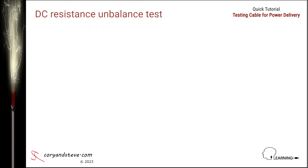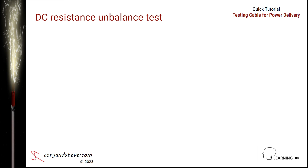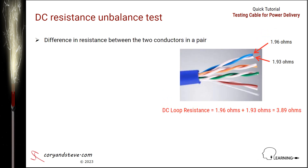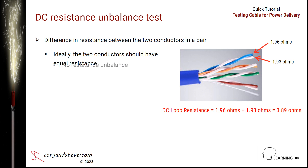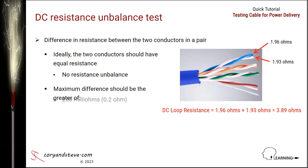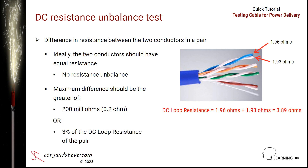Next we have DC resistance unbalance, the second of the three DC resistance tests. DC resistance unbalance for a pair is calculated as the difference in resistance between the two conductors in a pair — recall that DC loop resistance was the sum. Ideally, the two conductors should have equal resistance and there should be zero difference or no resistance unbalance in any of the four pairs. But in the worst case, the difference should be no greater than 200 milliohms or 3% of the DC loop resistance of the pair, whichever is greater.